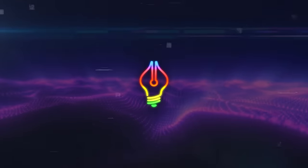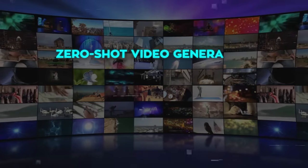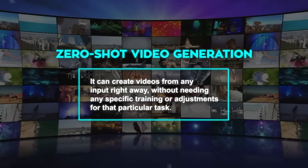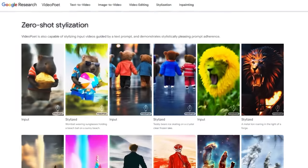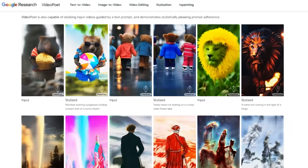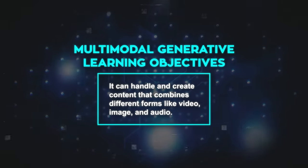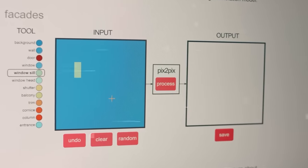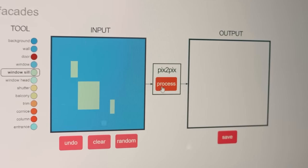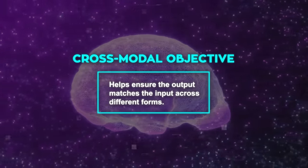Apart from its ability to generate videos, VideoPoet has some cutting-edge features. One key feature is zero-shot video generation — it can create videos from any input right away, without needing specific training for that particular task, because it's been trained on a huge variety of videos, images, and audio from many different areas and styles. Another feature is its multi-modal generative learning objectives, allowing it to handle and create content that combines different forms like video, image, and audio. It has a cross-modal objective that ensures the output matches the input across different forms.